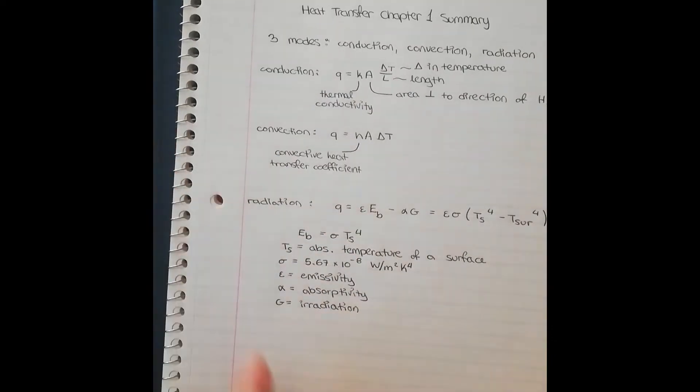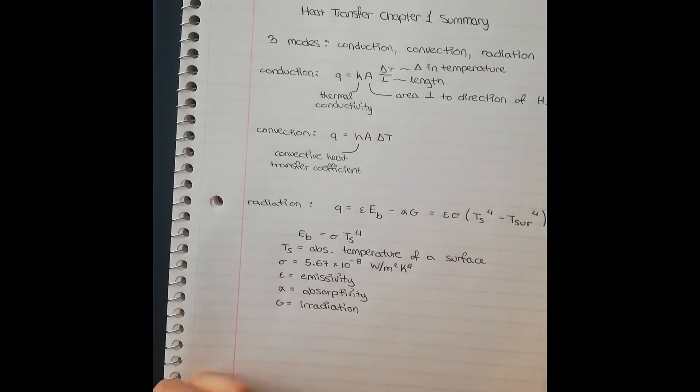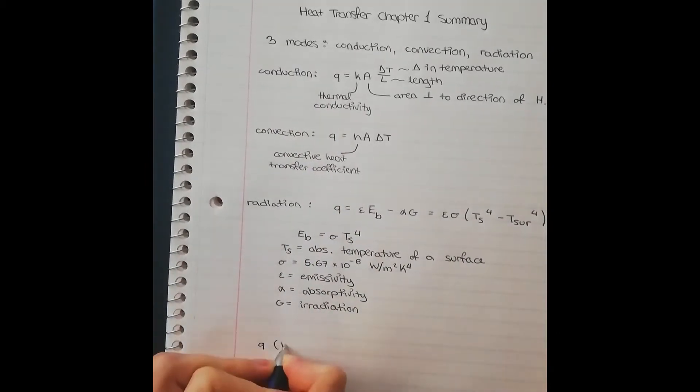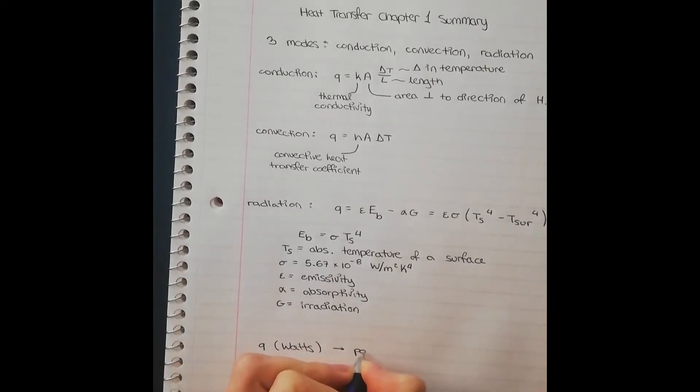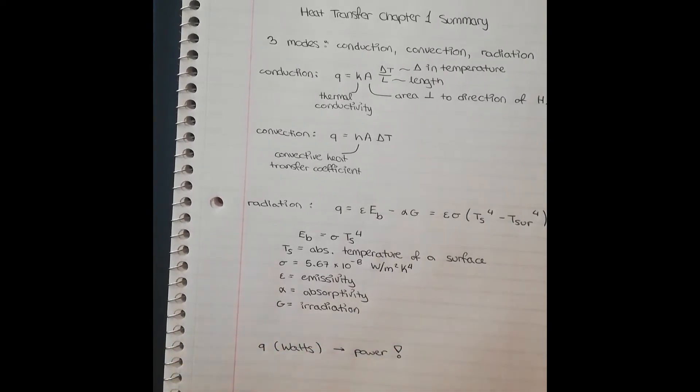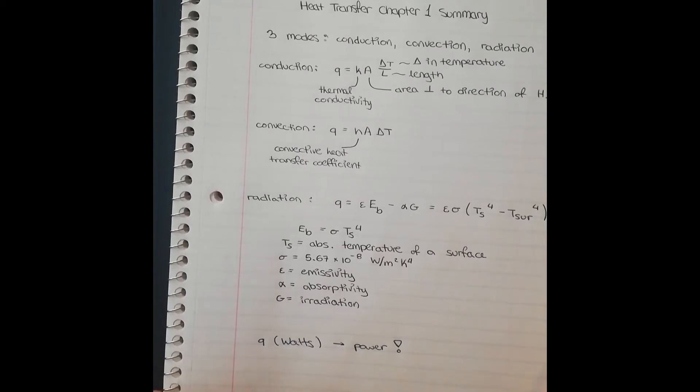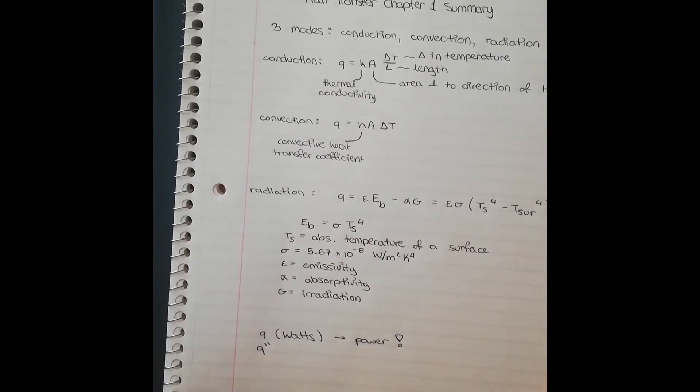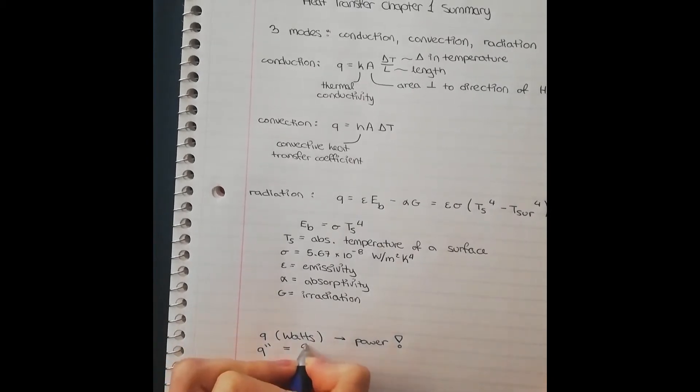So now I want to bring a couple more things to your attention. I want you to remember that Q has units watts, so it's basically power. Often times, you will actually write it as Q with two apostrophes next to it, double dash. And what this means is that it's being divided by the area.